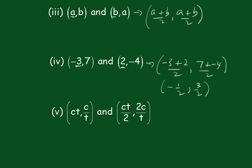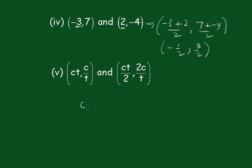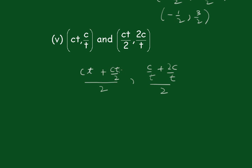This one a bit harder. This is going to be ct plus ct over 2 all over 2, and this one will be c over t plus 2c over t all over 2. Now this is 3ct over 2, 3ct over 2 over 2, and this one is going to be 3c over t with a common denominator over 2.